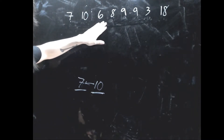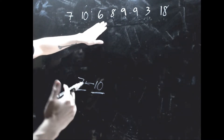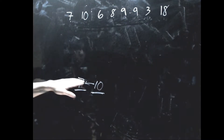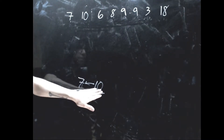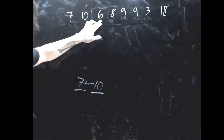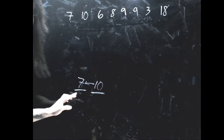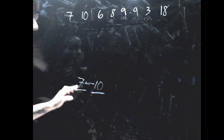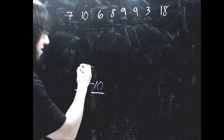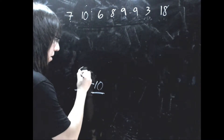Now I'm going to get to the 6. I'm going to look at the tops of the current piles — 7 and 10 — and find the first element that 6 is less than or equal to. Well, 6 is less than or equal to 7, so I'm going to put 6 at the top of this pile.